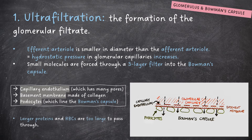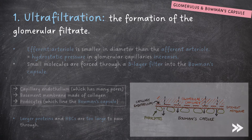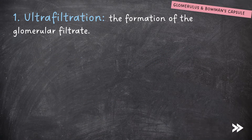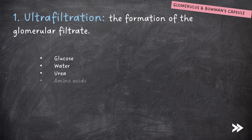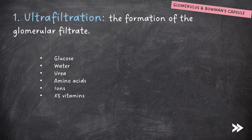So what goes through? We have glucose, water, urea, amino acids, ions, and excess vitamins. All of this forms something known as the glomerular filtrate.